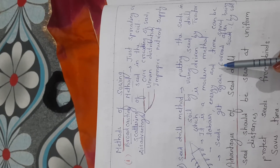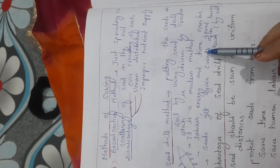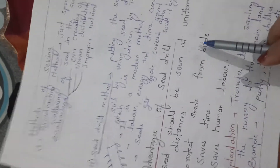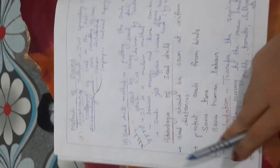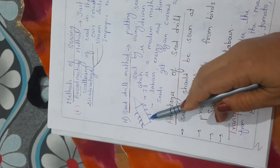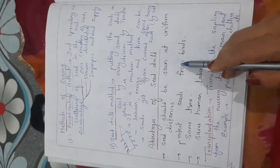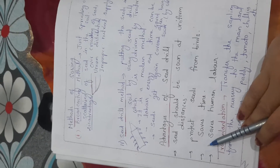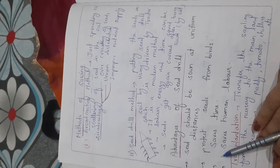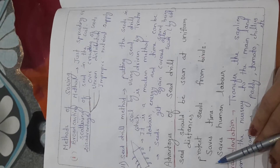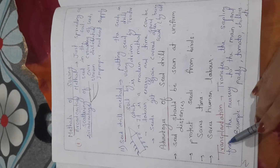There are also some advantages of the seed drill method — it can save time, energy, and labor cost. Seeds are sown at a uniform distance because in the seed drill they are situated at proper spacing. Seeds are also protected from birds, it saves our time and human labor, and seeds are sown at the proper depth and then covered by the soil.